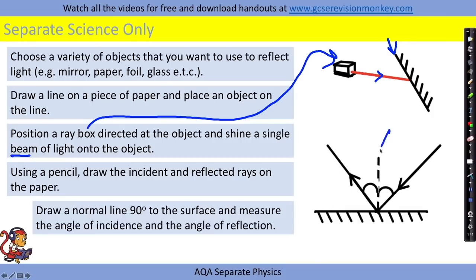Draw a normal line. This is the normal line which is always at 90 degrees to the surface and measure the angle of incidence. So that's this angle here which is between the normal and the incident ray and the angle of reflection.